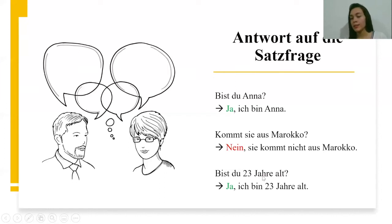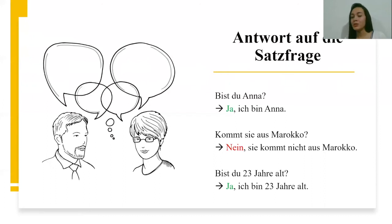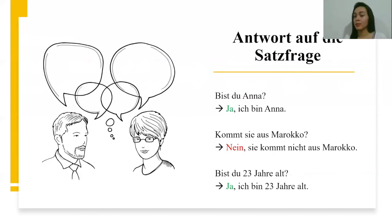Last example: Bist du 23 Jahre alt? — Are you 23 years old? Verb 'bist', subject 'du', object '23 Jahre alt'. And the answer is: Ja, ich bin 23 Jahre alt. Yes, I am 23 years old. Typical structure: subject 'ich', verb 'bin', object '23 Jahre alt'.